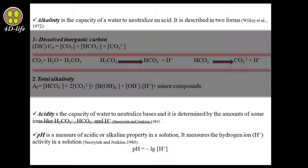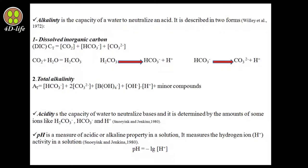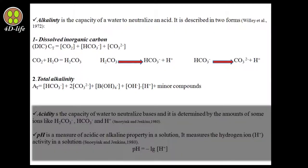Hydrogen ion makes the seawater more acidic, and in order to balance alkalinity, carbonate structures such as coral reef need to lose calcium carbonate in order to adjust seawater pH. In front of alkalinity we have acidity. Acidity is the capacity of water to neutralize bases and it is determined by ions like carbonic acid, bicarbonate, and free hydrogen ion. We have pH also as a measure of acidic or alkaline property in a solution. It measures the hydrogen ion activity in a solution. pH can be shown by this formula: minus logarithm of hydrogen ion.